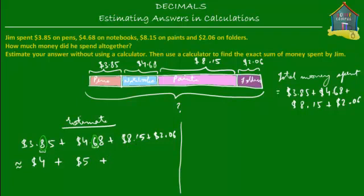For 8.15, you check the first digit after the decimal point and it's 1, which is less than 5, so you round it down — you don't do anything to the whole number and keep it as 8. Finally for 2.06, the first digit after the decimal point is 0, and 0 is obviously less than 5, so you keep the whole number unchanged and leave it as 2.